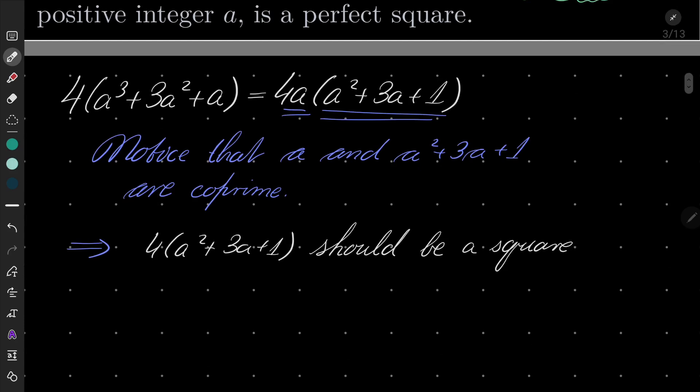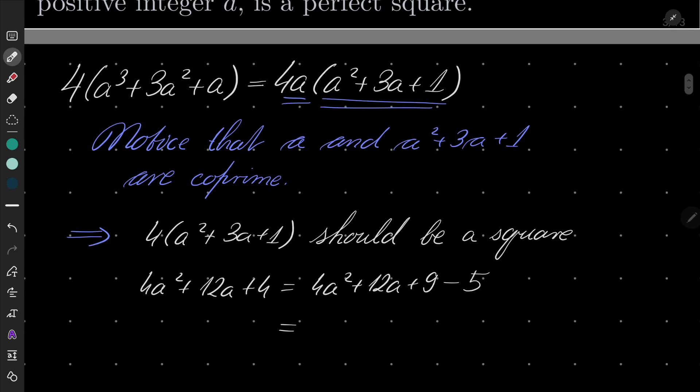But now let's notice that this number, 4a² + 12a + 4, and our trick: I can write it as 4a² + 12a + 9, minus 5. And that becomes (2a + 3)² - 5.